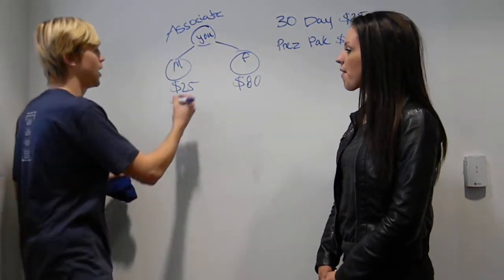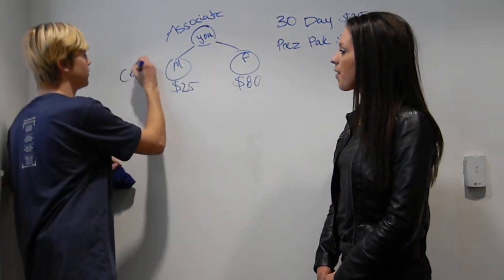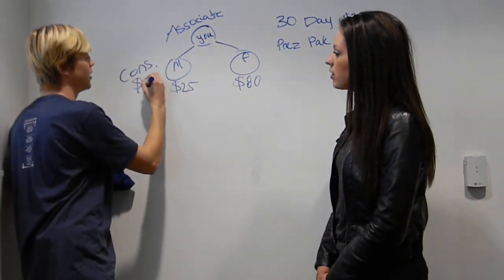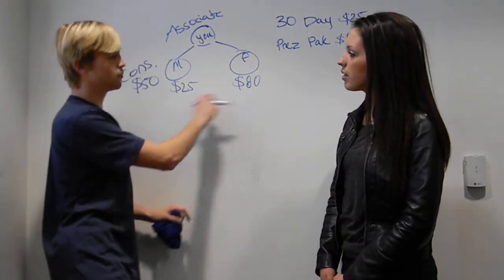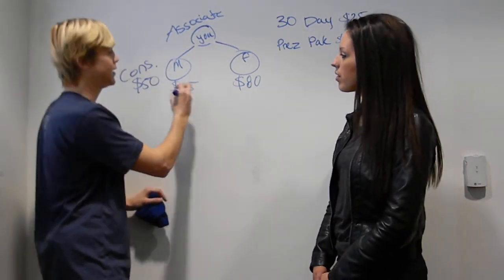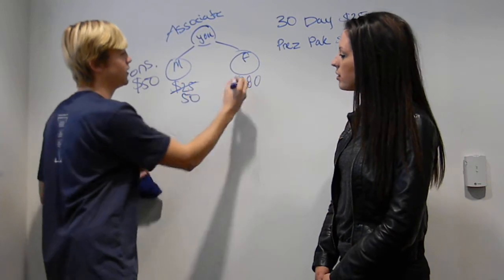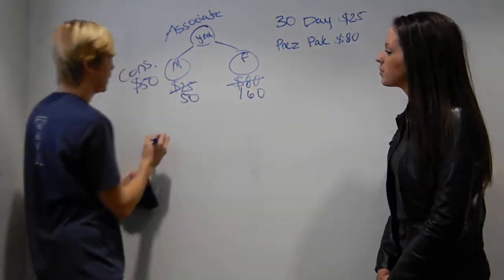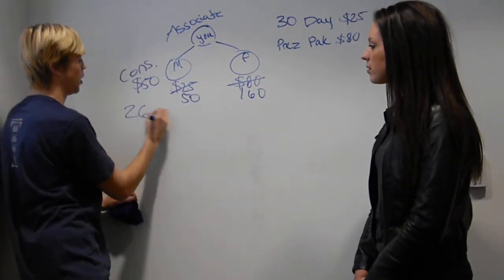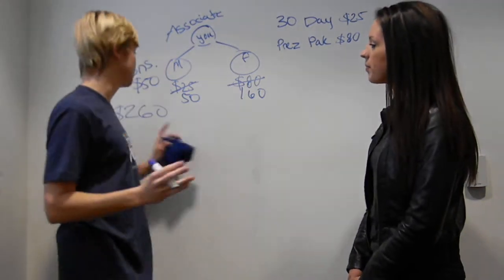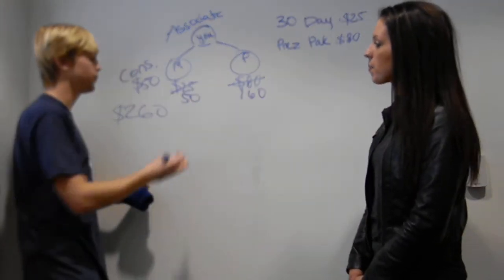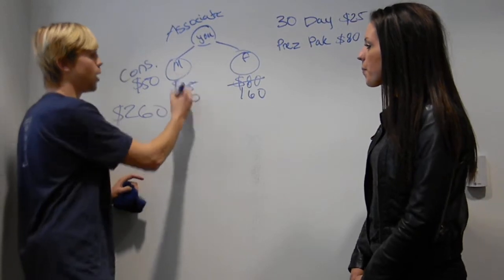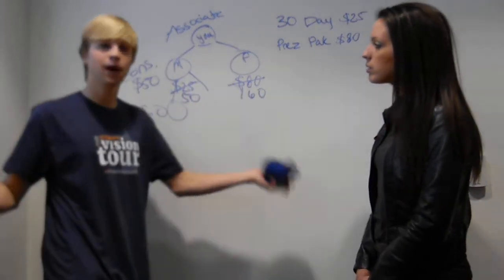You're going to tell a couple people about it and when you've told two people you've opened up your doors now to receive residual income that's going to pay you residually for the rest of your life as long as you want to be a part of it. You became a consultant and you get a $50 bonus for that. If you told your mom and your friend in the same week, they double your bonus. That goes to $50, that goes to $160.